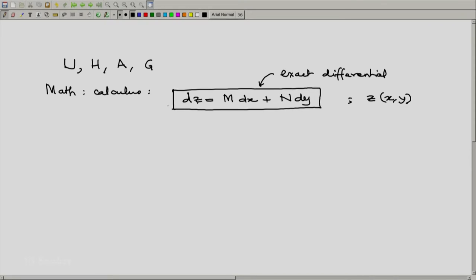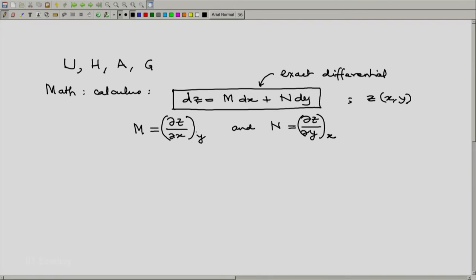And because this is an exact differential, what we are going to have is m will represent partial of z with respect to x at constant y, and n will represent partial of z with respect to y at constant x. Quite often in elementary treatments of mathematics, we do not write this function which is maintained constant.